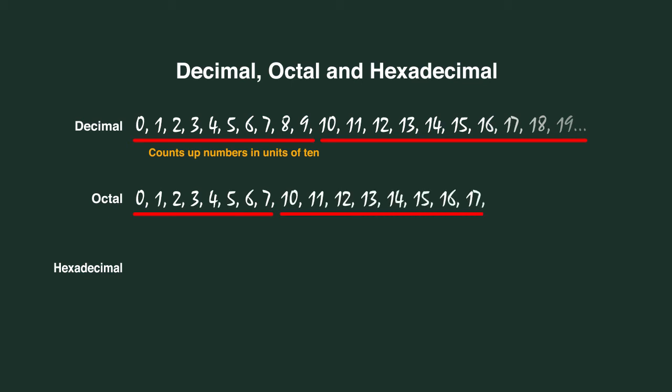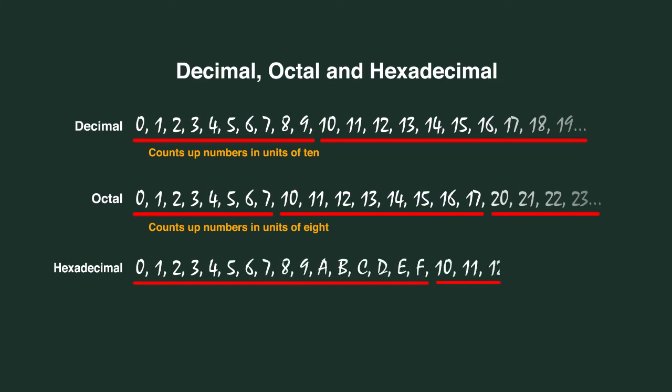Octal numbers produce a carry every 8 points. One zero is coming after 0 through 7. Hexadecimal numbers produce a carry every 16 points. One zero is coming after 0 through 9, A, B, C, D, E, and F.